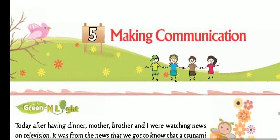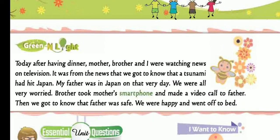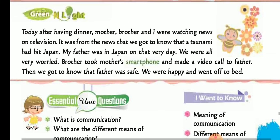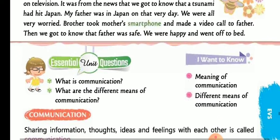Today we are going to read chapter 5 of class first EVS, term third: Making Communication. After having dinner, my mother, brother and I were watching news on television. It was from the news that we got to know that a tsunami had hit Japan. My father was in Japan on that very day. We were all worried. My brother took my mother's smartphone and made a video call to father. Then we got to know that father was safe. We were happy and went off to bed.